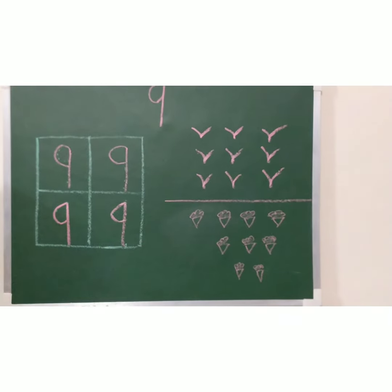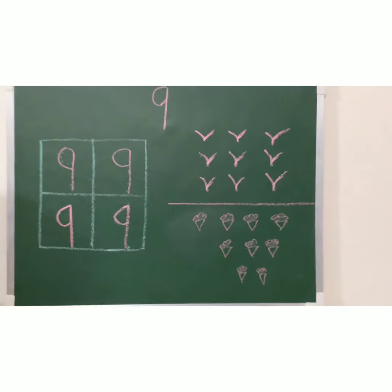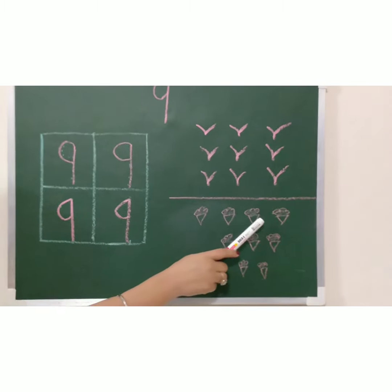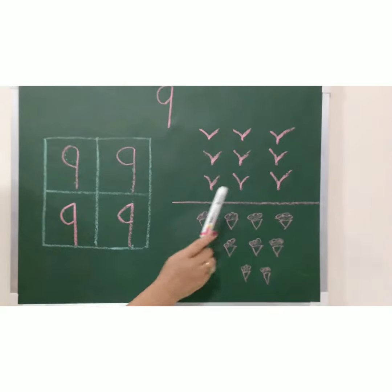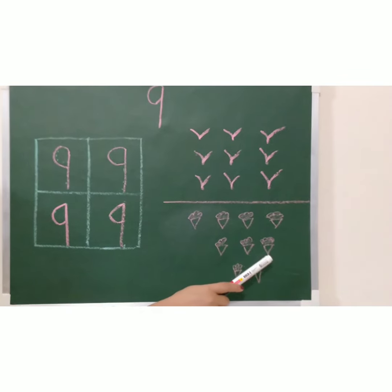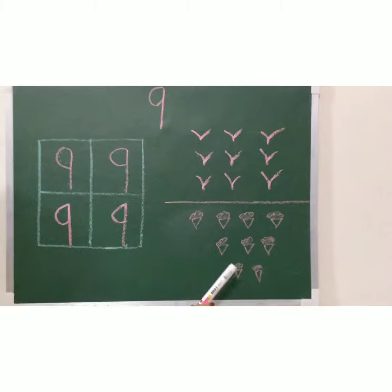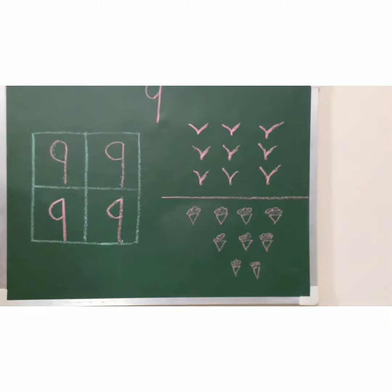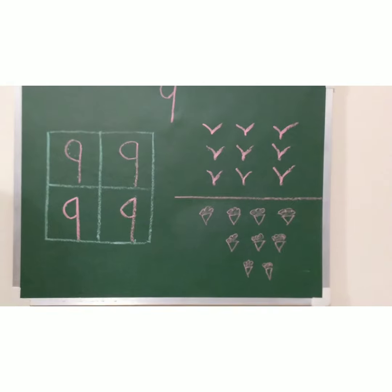Nine birds. One, two, three, four, five, six, seven, eight and nine. How many cones? Nine cones.